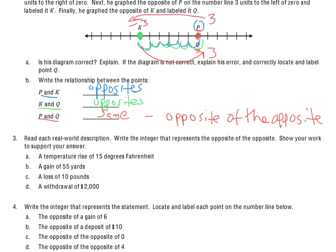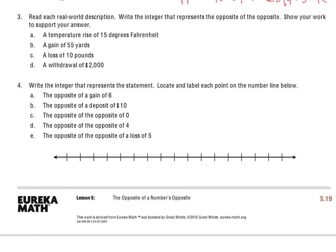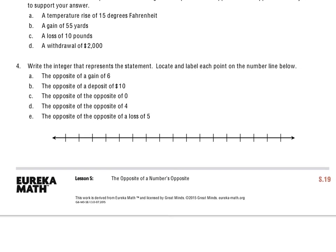Let's take a look down at the very last one, number 4. And I'll do a few of these ones as we go through. Write the integer that represents the statement. Locate and label each point on the number line below. So let's take a look at letter A.